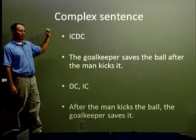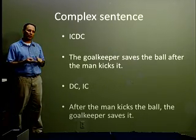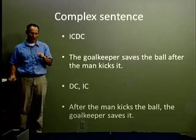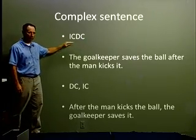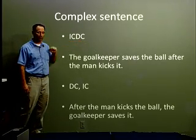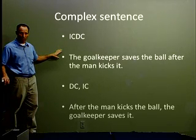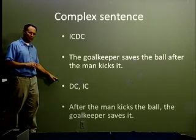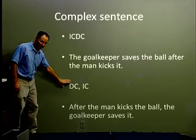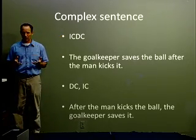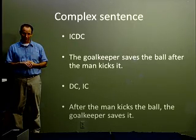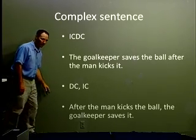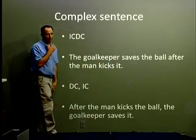To review: the complex sentence has one independent clause and one dependent clause. With complex sentences, there are two ways we can form them — two formulas. The first is ICDC, where the independent clause is first and then the dependent clause: 'The goalkeeper saves the ball after the man kicks it.' The second formula is DC comma IC. When we put the dependent clause with the subordinator at the beginning of the sentence, we need a comma at the end of the dependent clause: 'After the man kicks the ball, the goalkeeper saves it.'